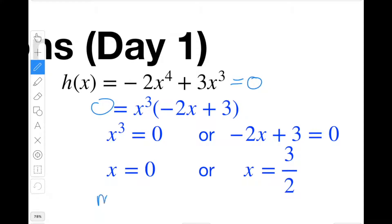This has a multiplicity of one and therefore it's going to cross. And because one is odd, it's going to cross the x-axis. And this has a multiplicity of three. Because three is also odd, it's going to cross the x-axis here as well. It's going to cross it at x equals zero and cross it at x equals three halves.